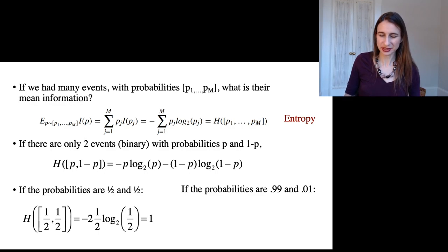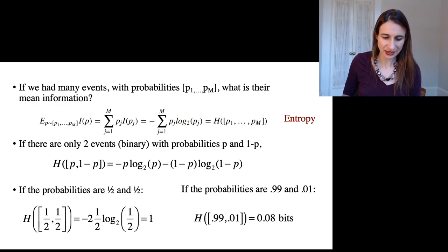However, if the probabilities are very uneven, if the coin is heavily biased, then the entropy is actually very low. So very biased coin, the entropy is low.